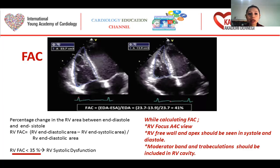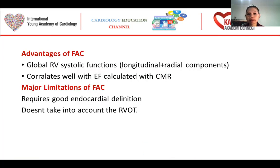Fractional area change is the percentage change in the right ventricle area between end-diastole and end-systole. We must be careful about some tips: the RV-focused 4-chamber view is the correct view for calculating fractional area change; the RV free wall and apex should be seen in systole and diastole; and the moderator band and trabeculations should be included in the RV cavity. Fractional area change assesses global RV systolic function — both longitudinal and radial components — and correlates well with ejection fraction calculated with cardiac MRI. It requires good endocardial definition and does not take into account the RV outflow tract.